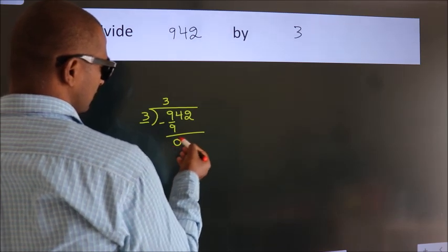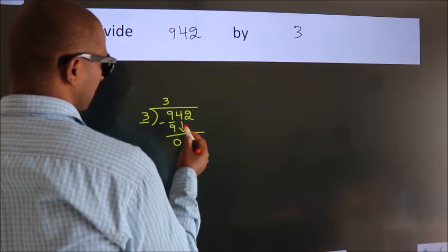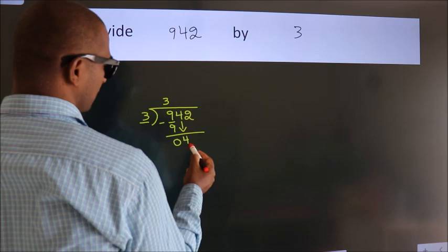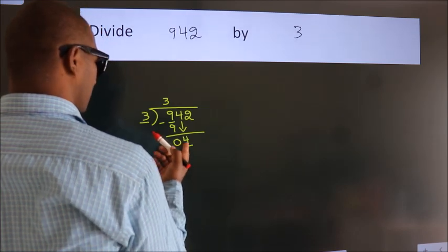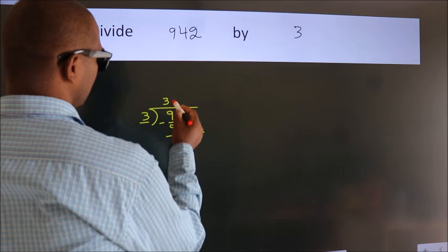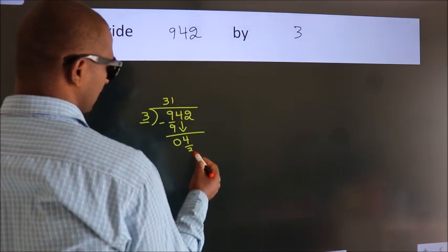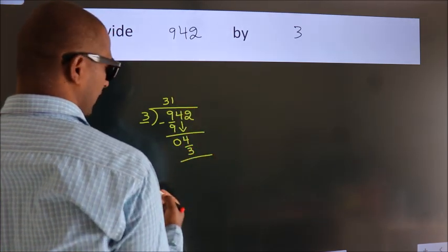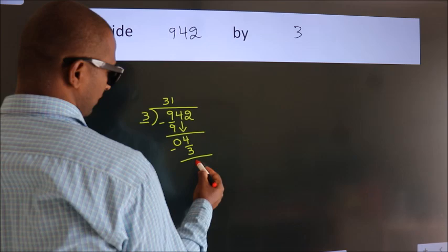After this, bring down the next number. So 4 down. A number close to 4 in the 3 table is 3 times 1, which is 3. Now we subtract. We get 1.